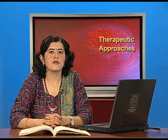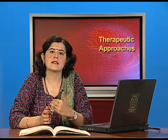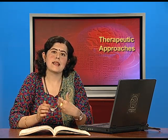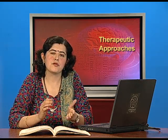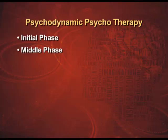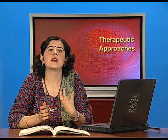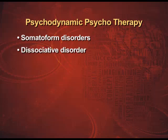The duration of psychodynamic psychotherapy is normally four to five sessions per week for a number of years. The three stages are: the initial phase, where the client becomes aware of procedures, rules, and routines and establishes rapport with the therapist; the middle phase, which involves transference, resistance, interpretation, and working through; and the termination stage, where the client has gained insight, recovered, and is better equipped to handle life issues. Psychodynamic psychotherapy is most used for somatoform disorders, dissociative disorders, and schizophrenia.